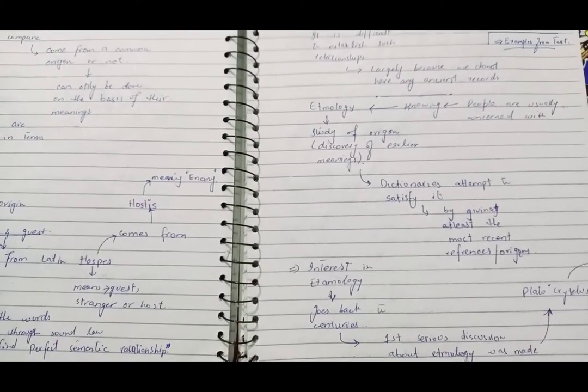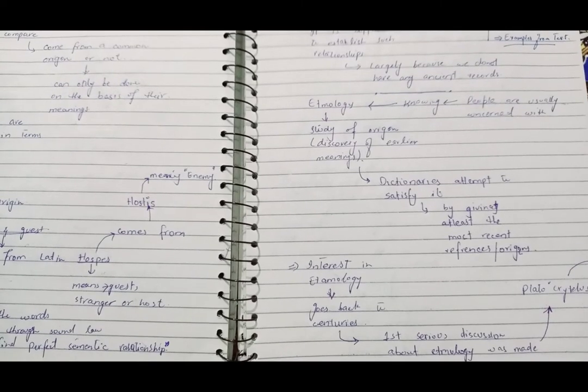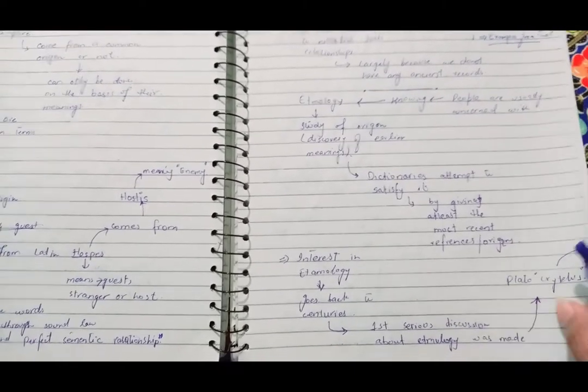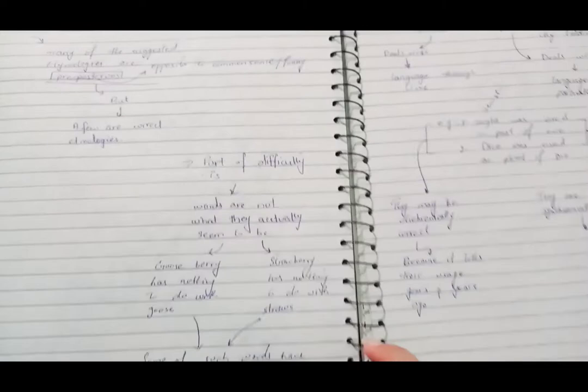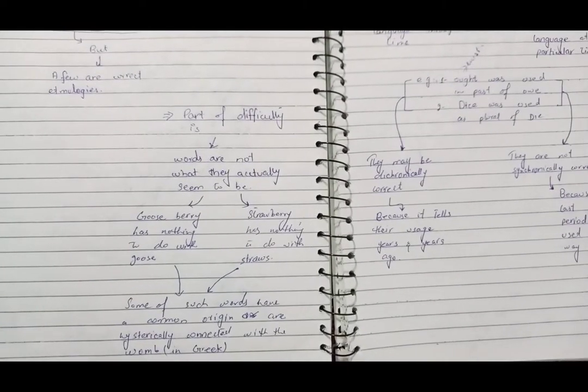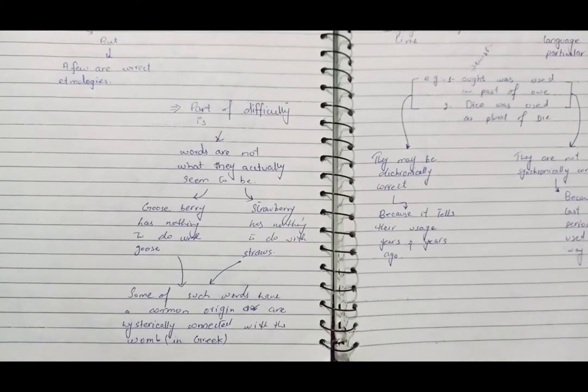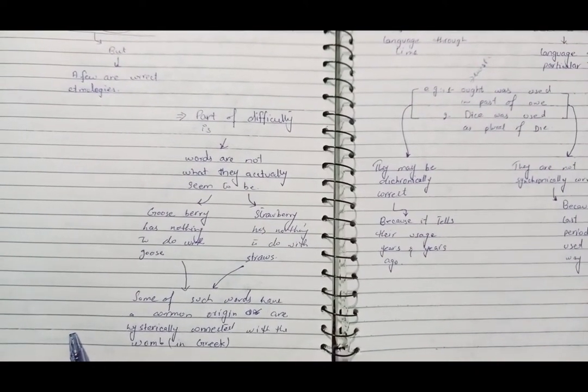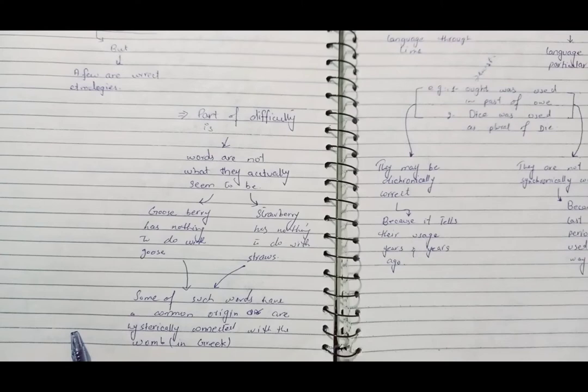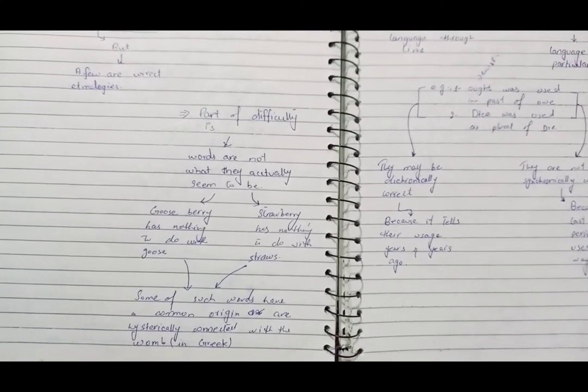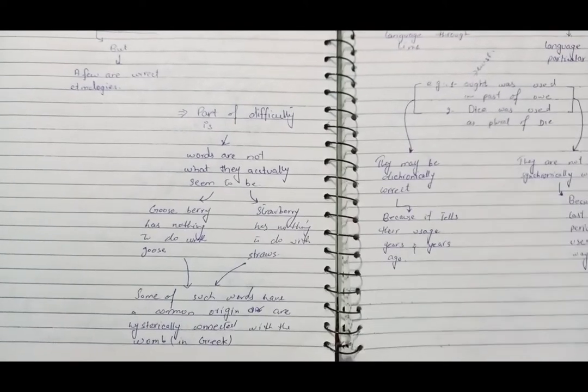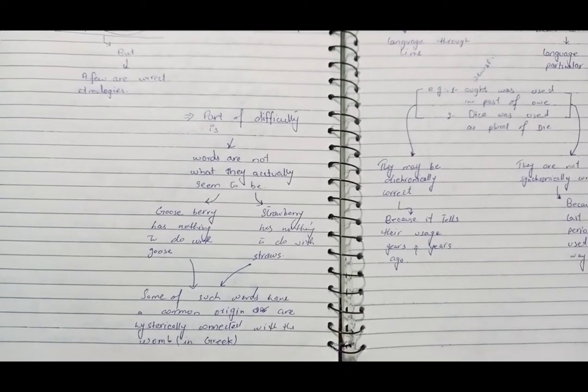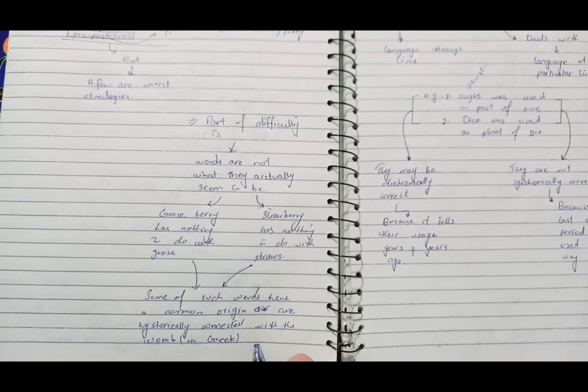Interest in etymology goes back to centuries. It is very old. But when was the first serious discussion? Plato did it in his book called Cratylus. But it is said that in his book there are many etymologies that are very inappropriate or useless, but a few of them were real and correct. The problem is that part of difficulty comes in words like gooseberry has nothing to do with goose, and strawberry has nothing to do with straw.